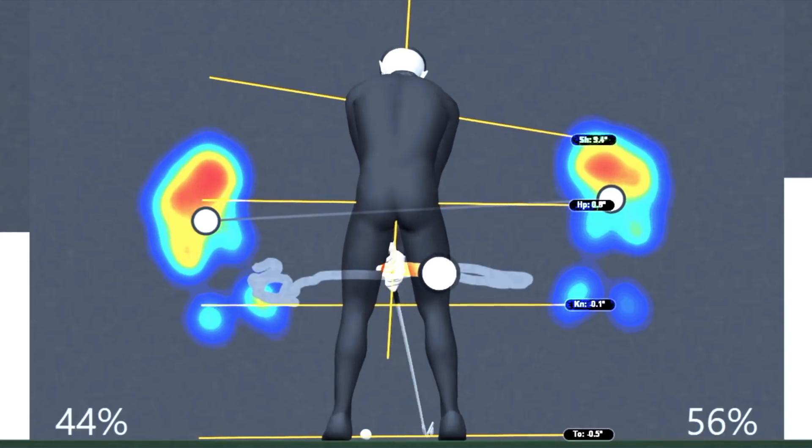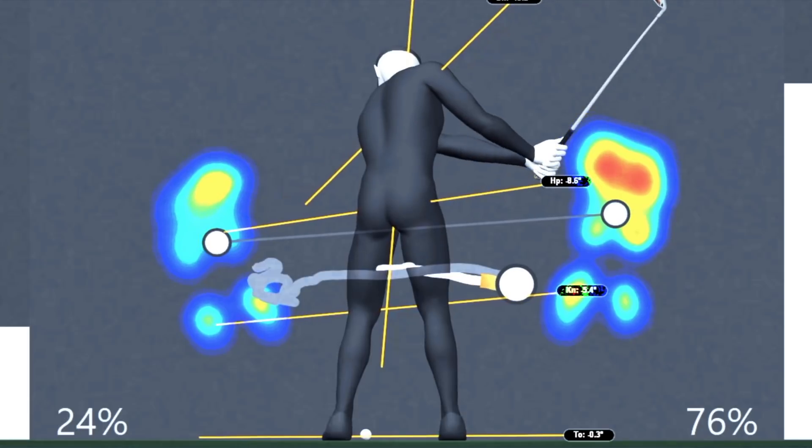So as we start to roll him forward, we're going to go to our same benchmark, that left arm parallel. If you recall, he did not have a lot of mass shift to the right. But look at how much pressure he has swung to the right foot. Almost 80%. And we've all probably heard of that classic 80-20 at the top, 80-20 at impact. It's not exactly true.